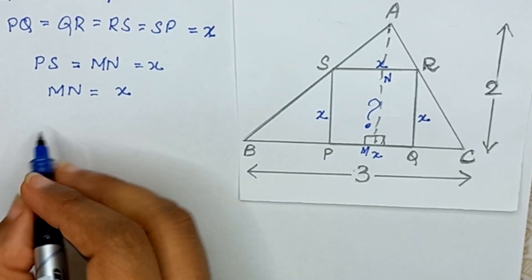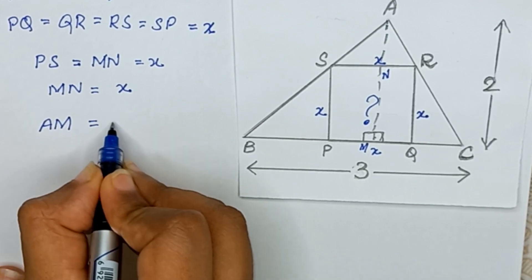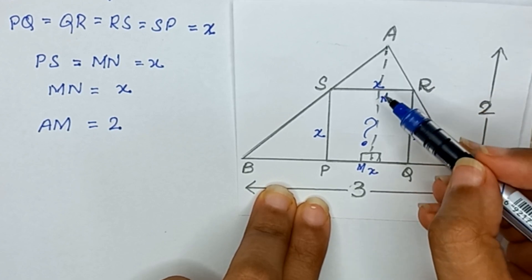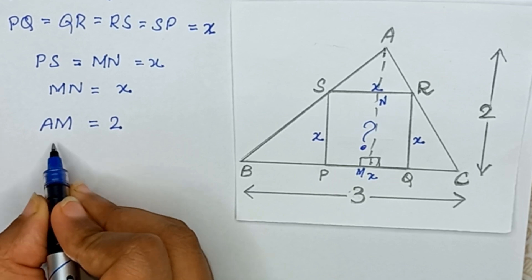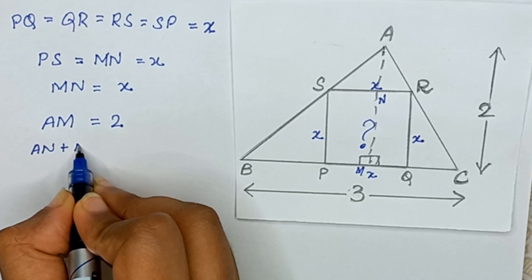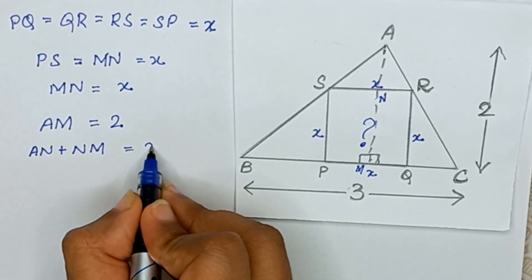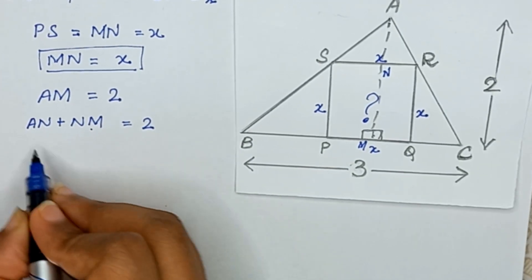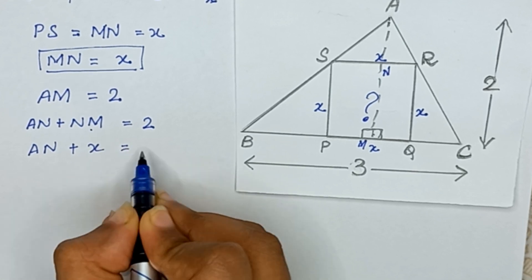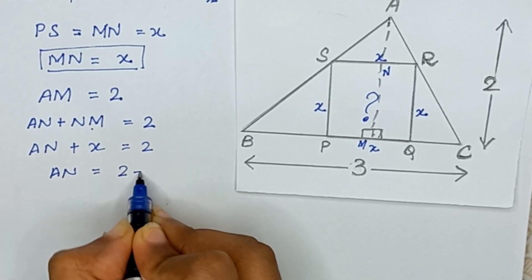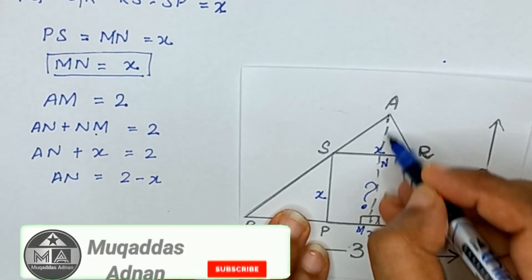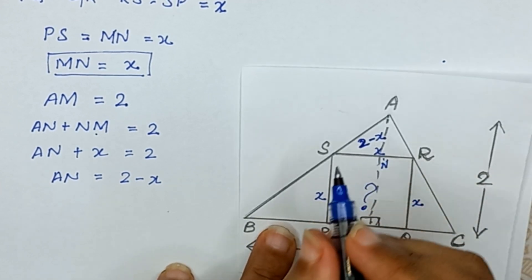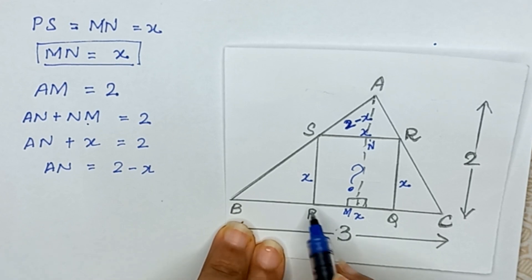The height AM is equal to 2. From the figure, AM equals AN plus NM. Since NM equals x, we have AN plus x equals 2, so AN equals 2 minus x.